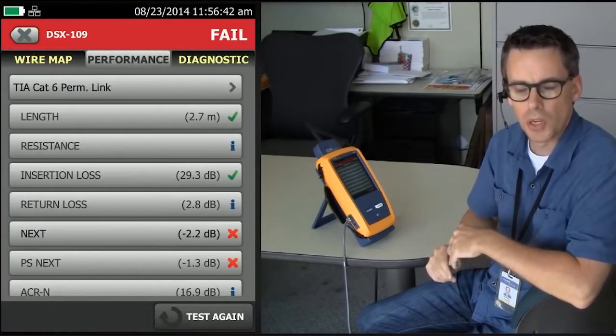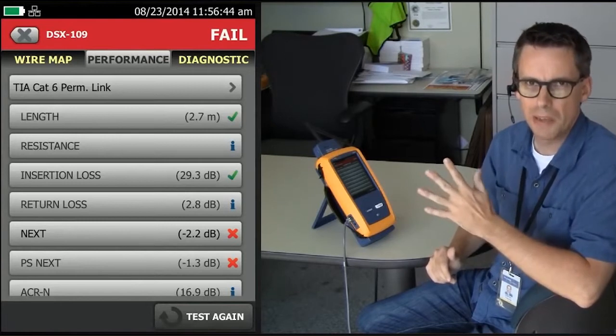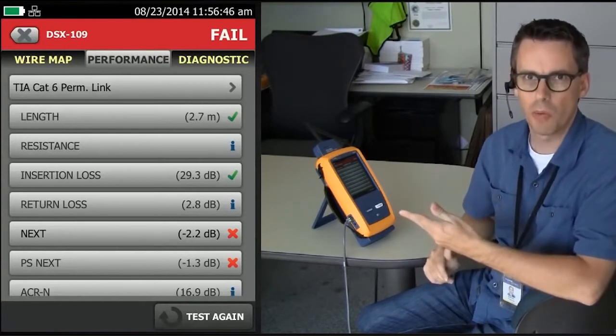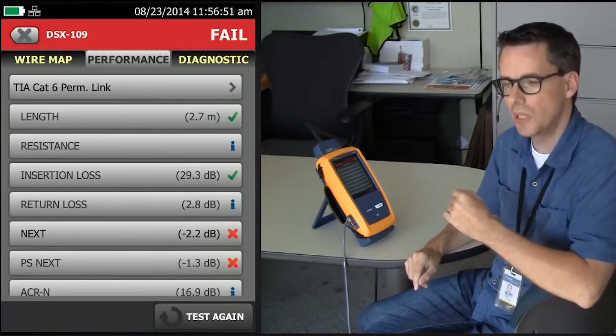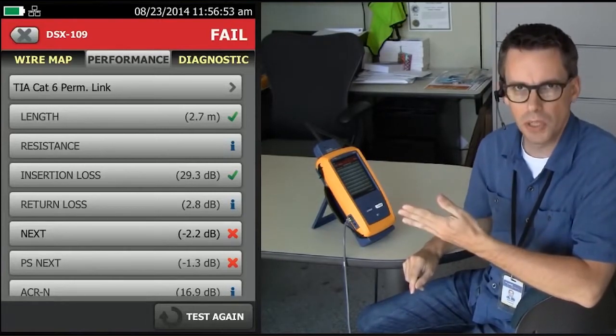In this example, we've got a very short link, 2.7 meters, about 8 feet. And of course, the problem is it's failing crosstalk. That's not uncommon if you're using mediocre components.